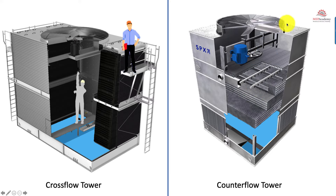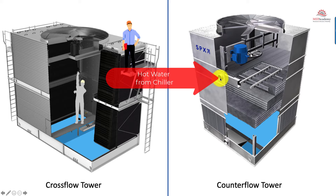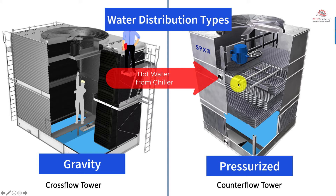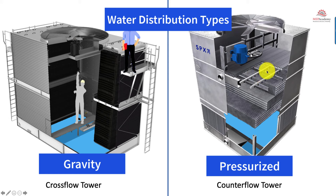Hot water comes from the chiller and enters the tower. There are two water distribution types: pressurized and gravity. On a counter flow it's pressurized — the hot water comes in, goes through the distribution header and into the distribution pipes, and through the nozzles it's sprayed out over the fill.